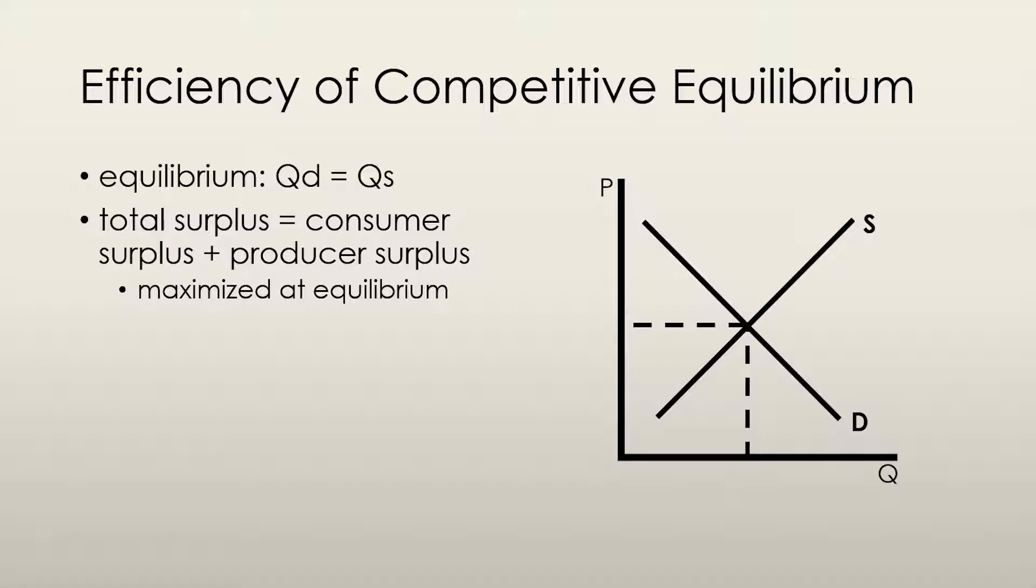Left alone, the market will reach a point of equilibrium where the quantity supplied of a good equals its quantity demanded at some price. At equilibrium, the total surplus of the economy, equal to the consumer surplus plus the producer surplus, is maximized.